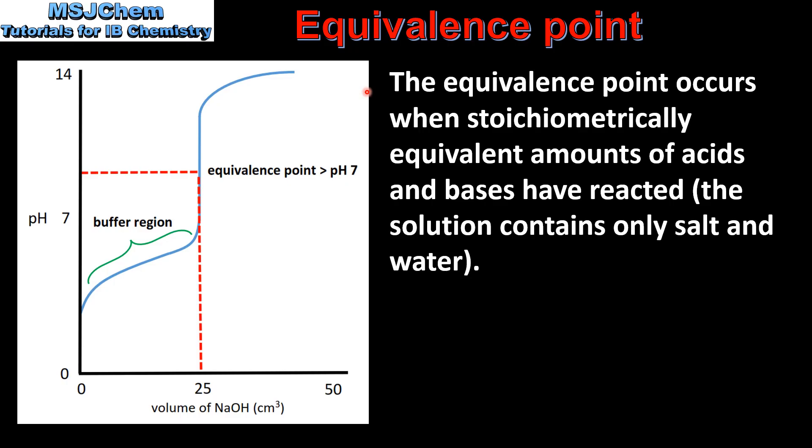The equivalence point on a pH curve occurs when stoichiometrically equivalent amounts of acids and bases have reacted. This is when the solution contains only salt and water.